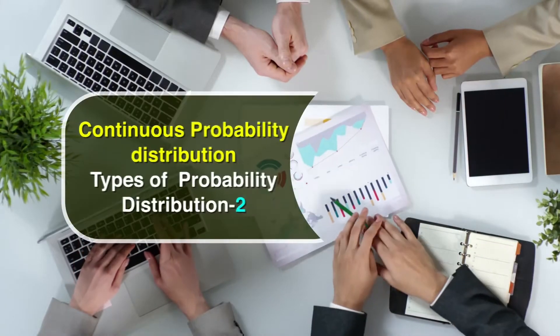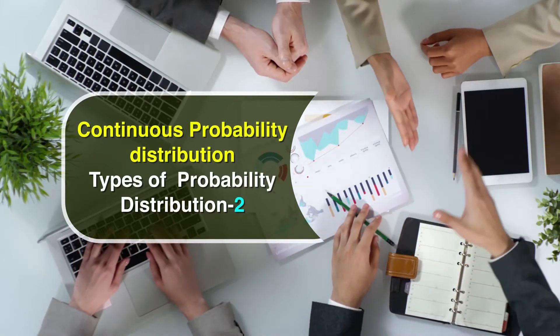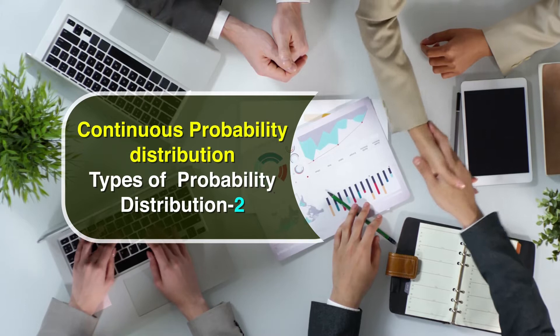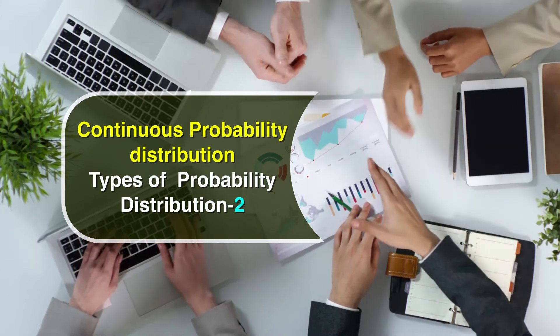We have already had two thought-provoking sessions focused on probability distributions — the introduction to probability distribution, the types of probability distribution 1 which was more about discrete probability distribution. This particular session is talking about types of probability distribution 2, which is known as continuous probability distribution.